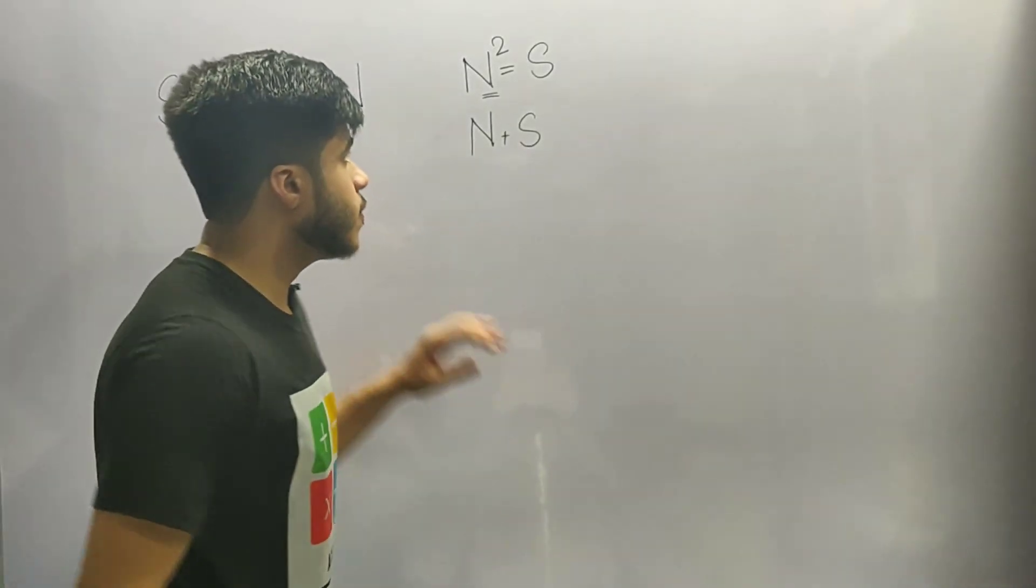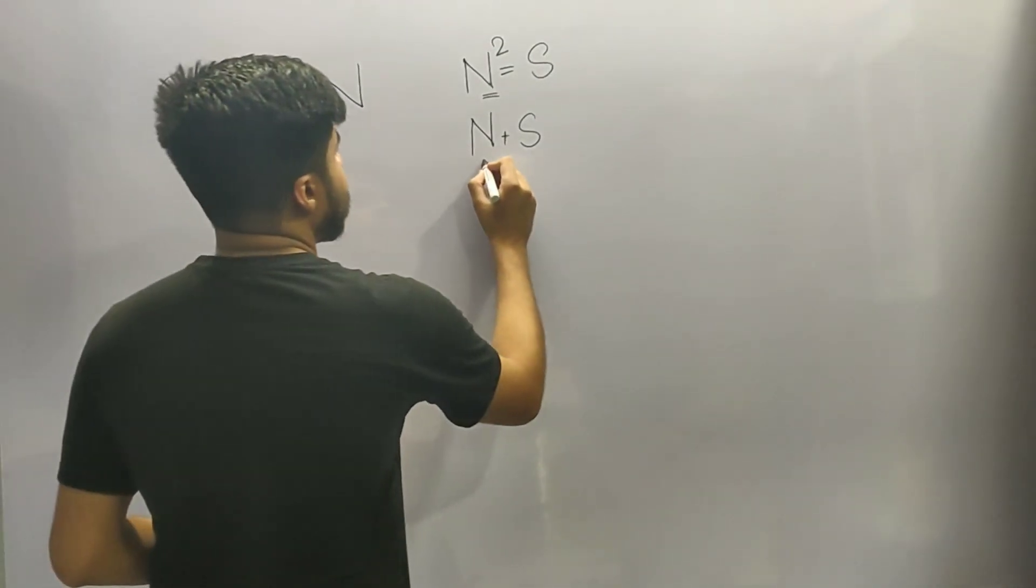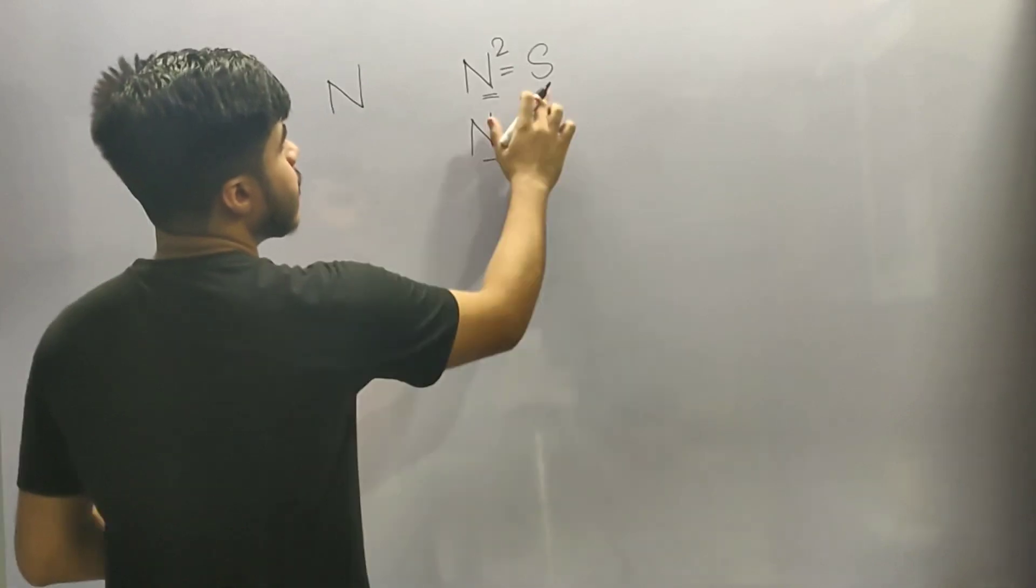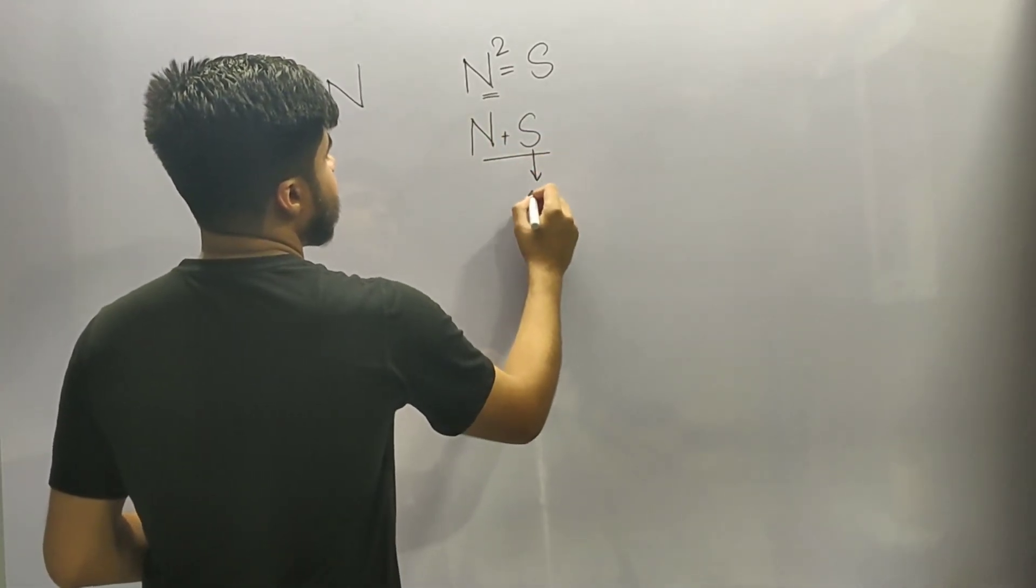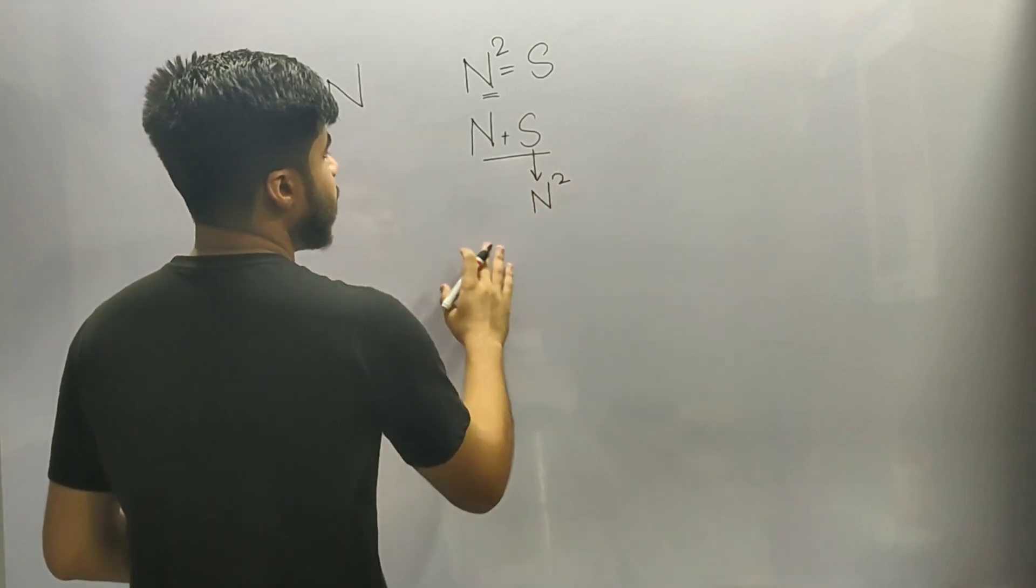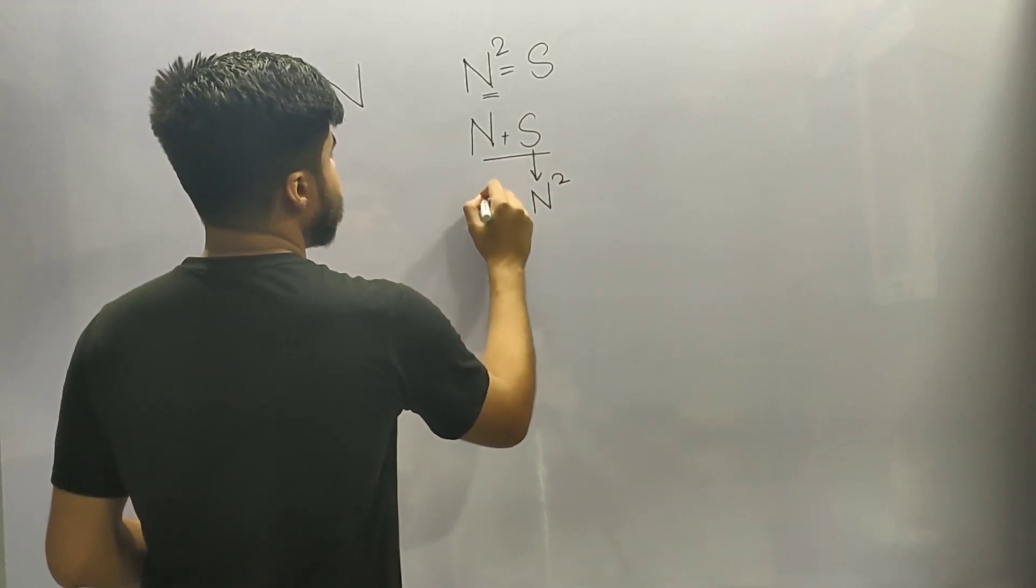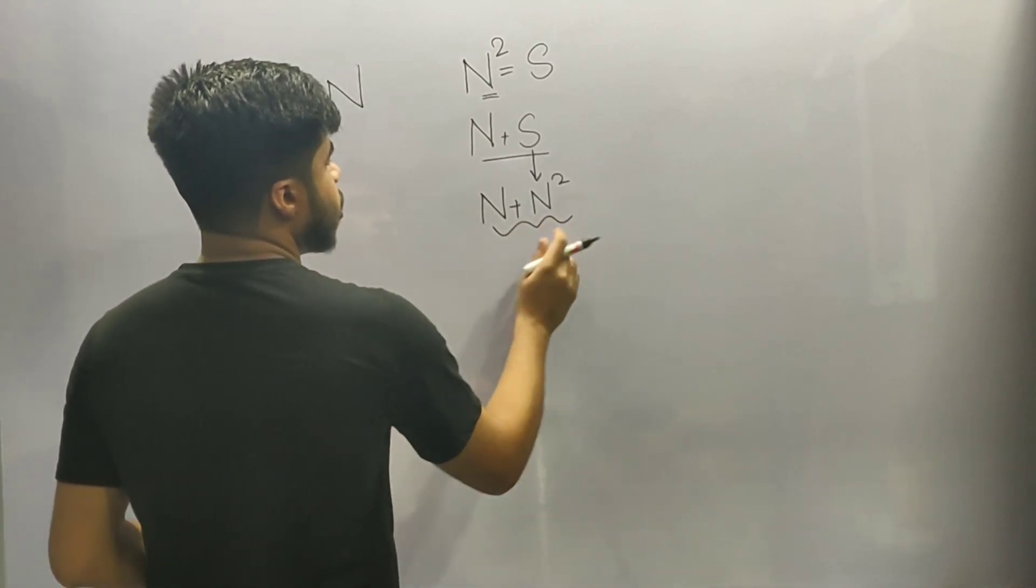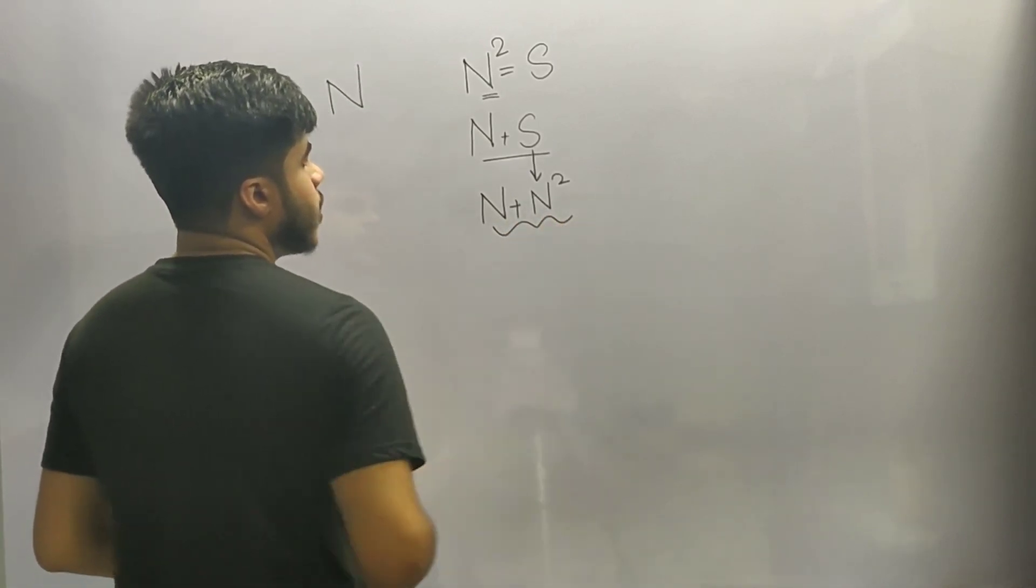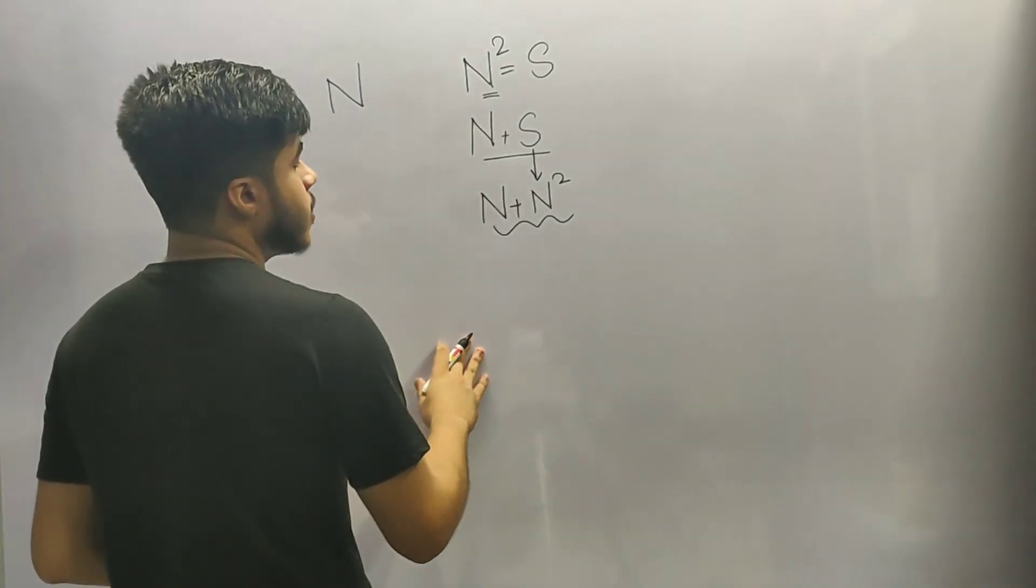For the given question, we have to find what is the minimum value of n plus s. Now we are given that n square is equal to s. So in place of s I can write as n square. So we have to find what is the minimum value of n plus n square. Now over here we have a single equation in the terms of n. Now we can apply the rule of minima and maxima.